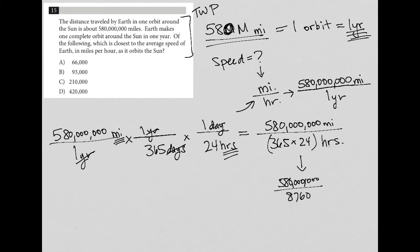365 times 24 is 8760. And then now I am going to use a calculator. So when I divide 580 million, 3, 1, 2, 3, divided by 8,760, what I get is 66,210 and some other stuff. And my unit is miles per hour.